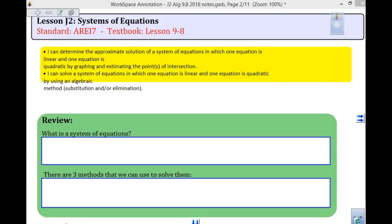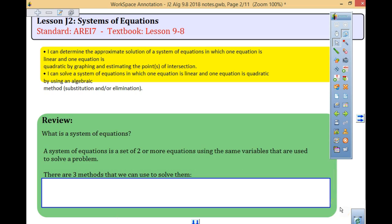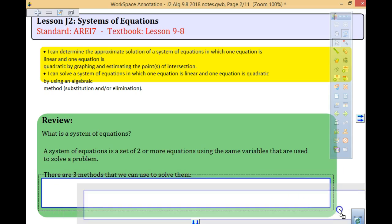We did systems with linear equations. We did systems by graphing where the two straight lines intersected at a point, were parallel, or were on top of each other with no solution or infinitely many solutions. A system of equations is an equation that has two or more equations using the same variables to solve the problem.